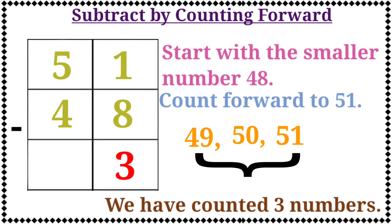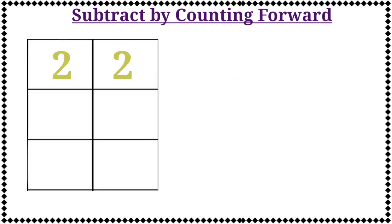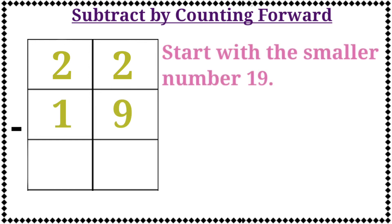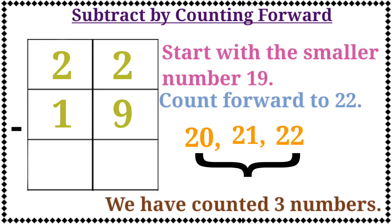The next example is 22 minus 19. Start with the smaller number 19, then count forward to 22. Let's count: 20, 21, 22. Now we have counted 3 numbers. So, let's write the number 3 in the box.